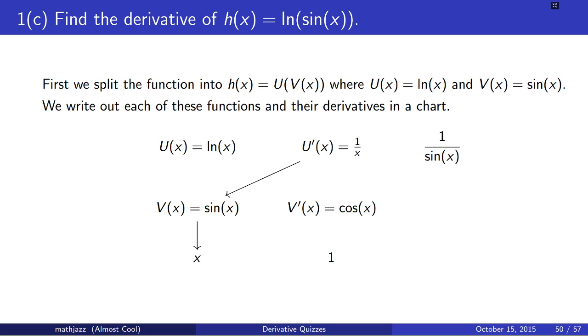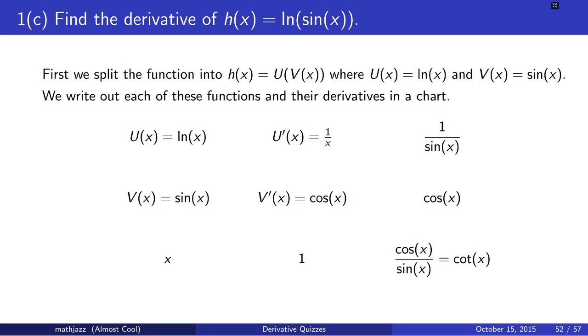We plug sine of x into 1 over x. We plug x into cosine, and then we multiply cosine by 1 over sine x to get cotangent, and cotangent is the derivative of h of x.